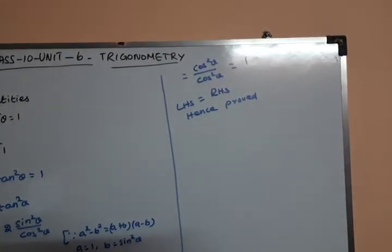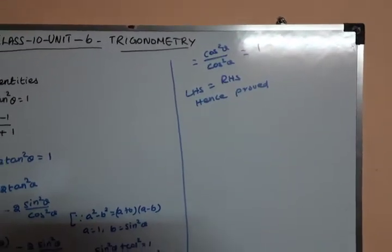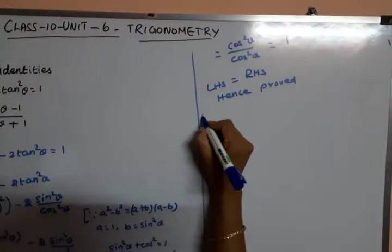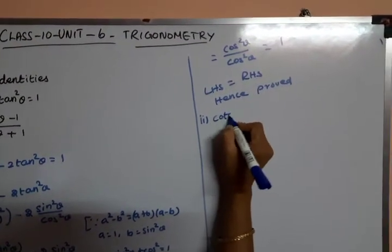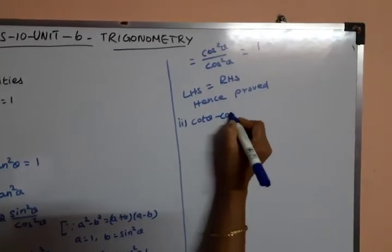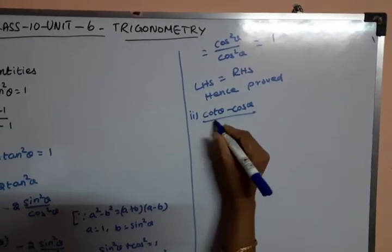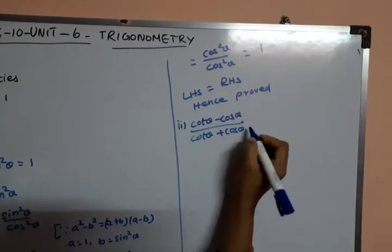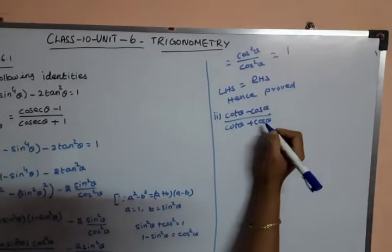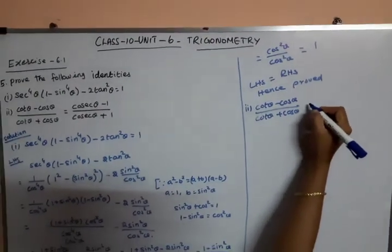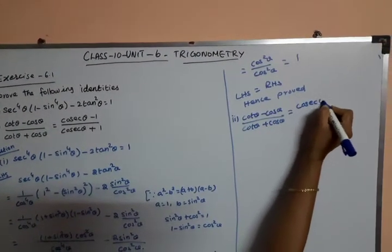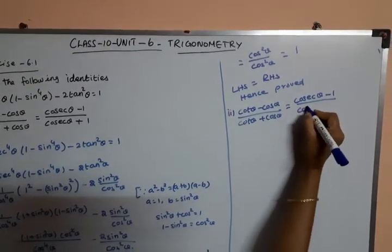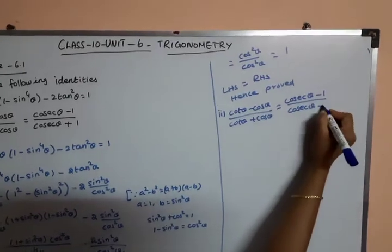Next is the second problem: (cot²θ minus cosθ) divided by (cotθ plus cosθ) equals (cosecθ minus 1) divided by (cosecθ plus 1).